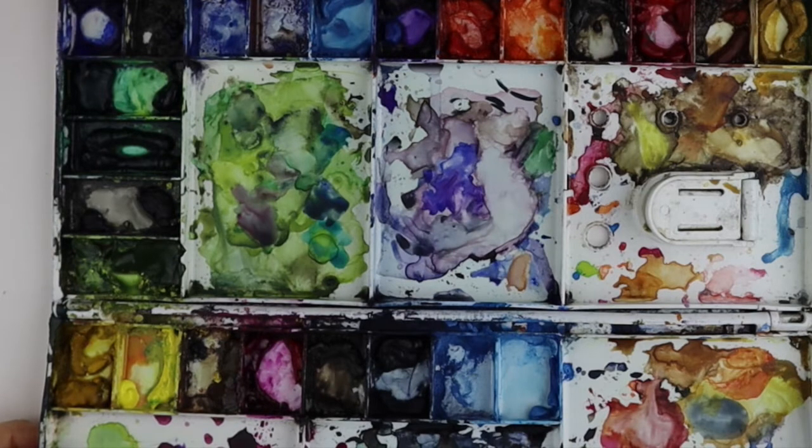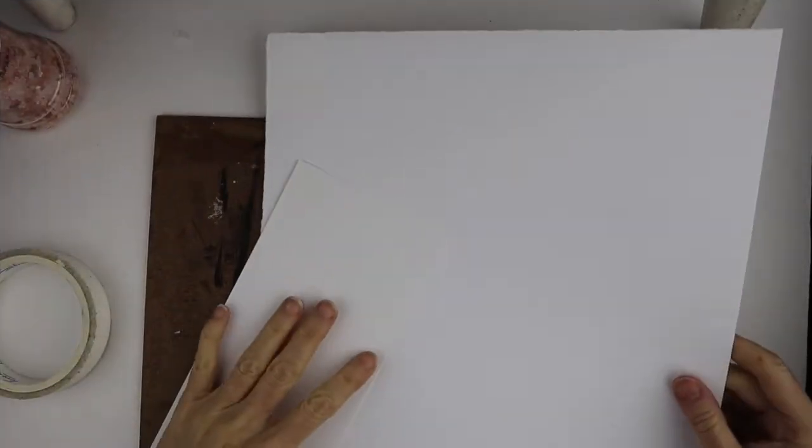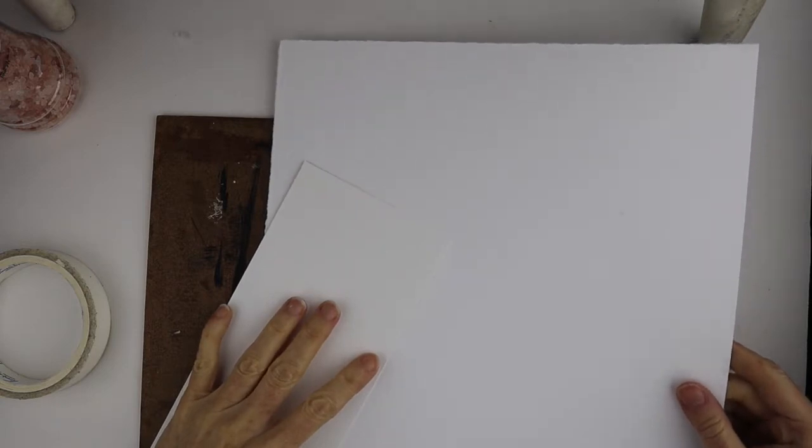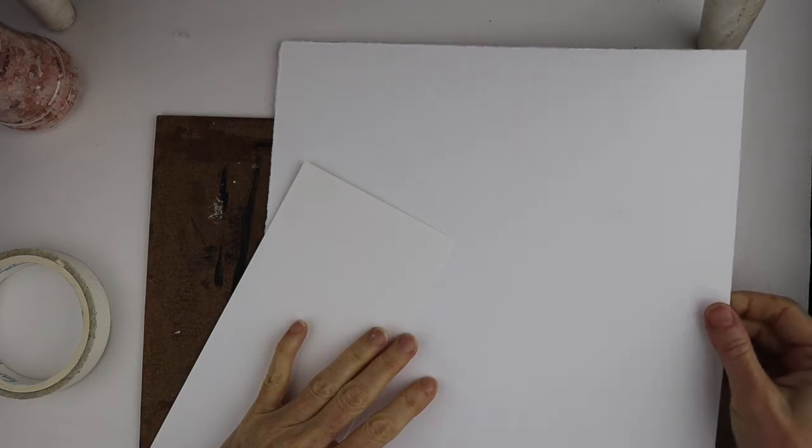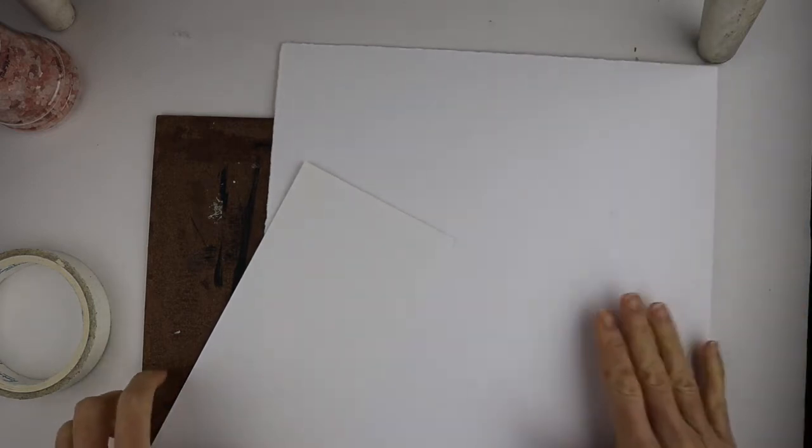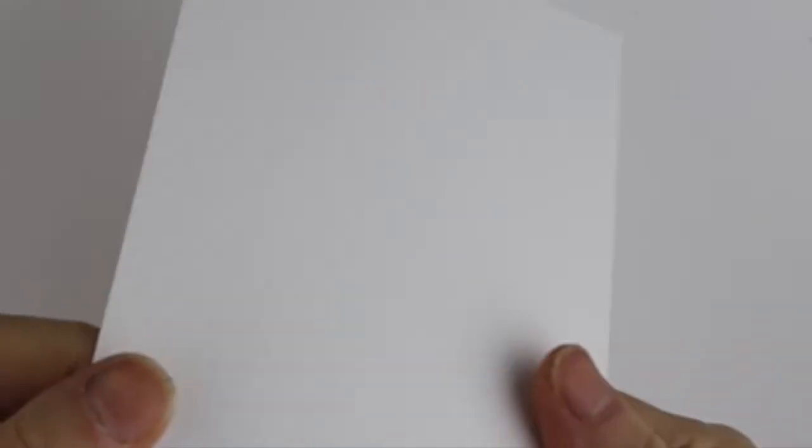So of course you're going to need your paper. I like to use 140 pound paper. You can also get 90 pound which is thinner or 300 pound which is quite thick, but I like the medium weight. You can get it with a texture, it's got a bumpy texture to it, or the smooth. I personally prefer the smooth one.